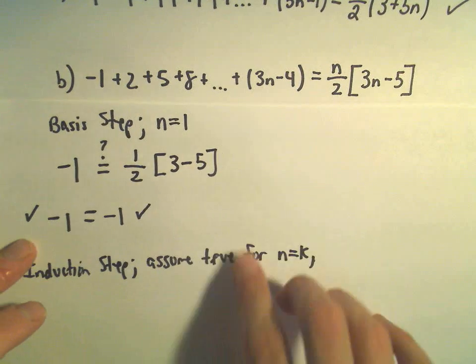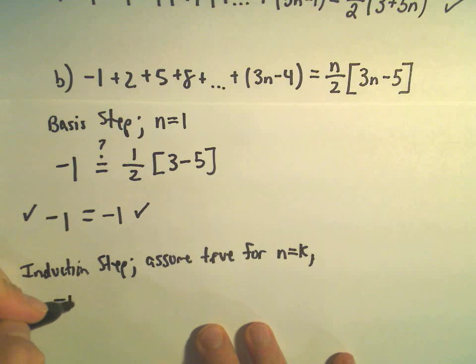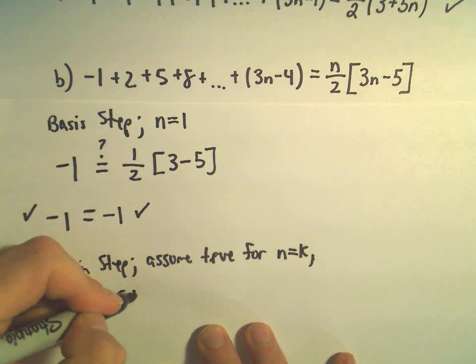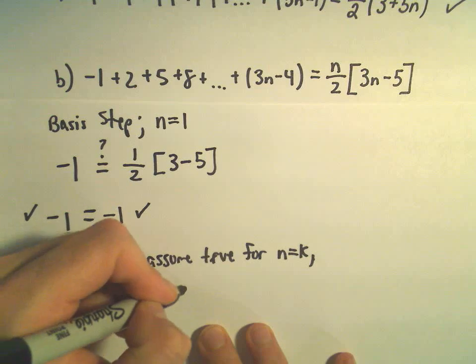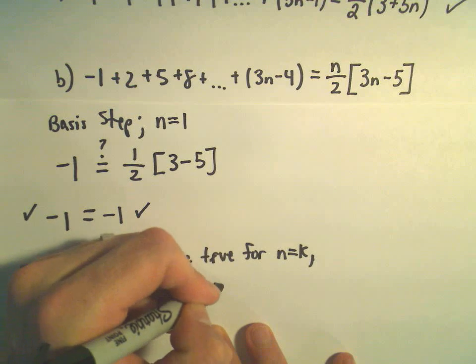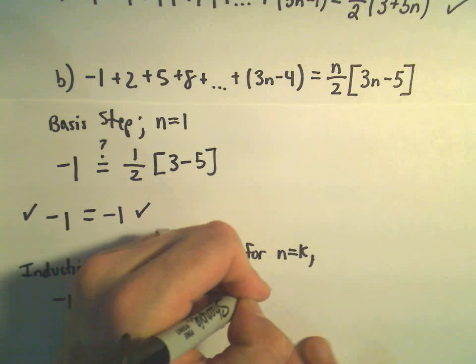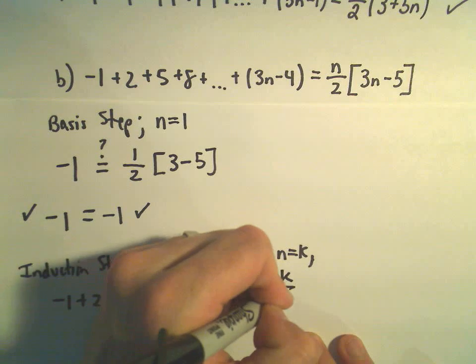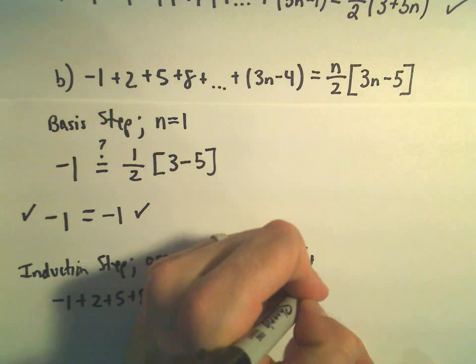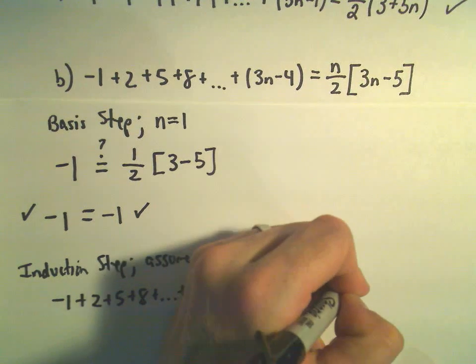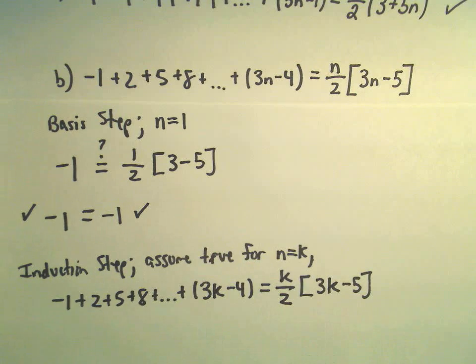Okay, if we assume it's true for n equals k, that's going to give us negative 1 plus 2 plus 5 plus 8 plus dot dot dot, 3k minus 4. We're assuming that's going to equal, and then on the right we'll get k over 2 times 3k minus 5.